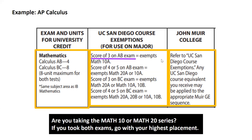A score of 3 on the Calculus AB exam exempts you from Math 10A. This means if you are pursuing the Math 10 series, take Math 10B; if you are pursuing the Math 20 series, take Math 20A. A score of 4 or 5 on the Calculus AB exam exempts you from Math 20A or Math 10A. So, if you are pursuing the Math 10 series, take Math 10B; if you are pursuing the Math 20 series, take Math 20B.